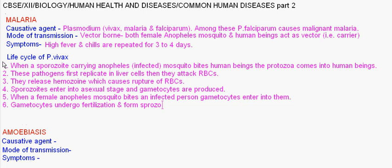When a sporozoite-carrying Anopheles mosquito bites a human being, the protozoan comes into human beings and human beings get affected. Like this, the life cycle of Plasmodium vivax goes on as a continuous cycle.